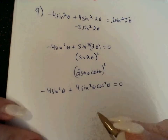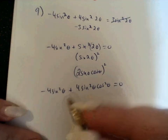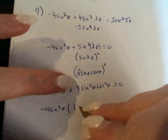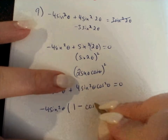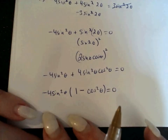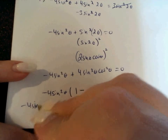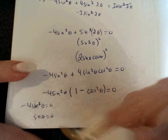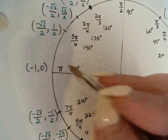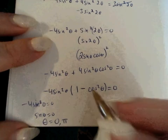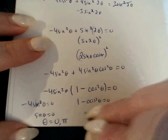So if I have negative 4 sine squared theta equals 0, I can see a common factor of sine squared. I'm going to factor out negative 4 sine squared, and I'm left with 1 minus cosine squared equals 0. Using the zero product property, I set each factor equal to 0. Negative 4 sine squared theta equals 0 when sine equals 0. Sine is the y value, and it equals 0 on the x-axis, so we're looking at theta equals 0 and π.